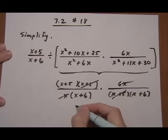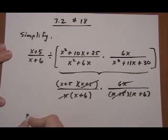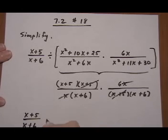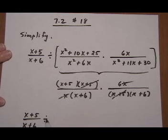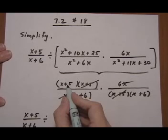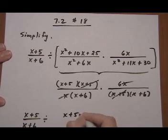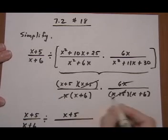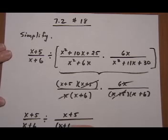So now we have — I'm going to rewrite the initial term that we ignored for a few minutes. We have x plus 5 over x plus 6, divided by x plus 5 all over x plus 6, times x plus 6 times x plus 6.